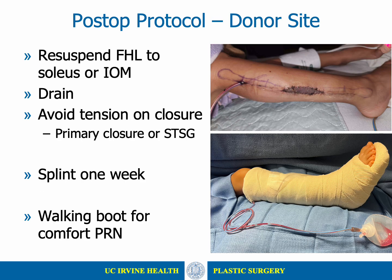The flexor hallucis longus muscle is re-suspended to the soleus muscle or the interosseous membrane. The wound is closed over a drain while avoiding over-tight closures, which increases the risk for wound healing complications and compartment syndrome. Skin grafting should be performed if there is any tension on the wound. Postoperatively, the ankle is splinted in a neutral position, and the splint is removed at one week to encourage ambulation. Patients should be instructed to elevate the leg and wrap it with an ACE wrap for several weeks postoperatively to improve comfort and decrease edema.